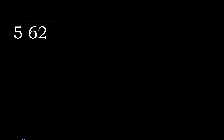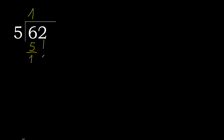62 divided by 5. 6 is not less, therefore work with 6. 5 multiplied by which number is nearest to 6 but not greater? 5 multiplied by 2 is 10 — that is greater. Multiplied by 1 is 5, which is not greater. 6 minus 5 is 1.